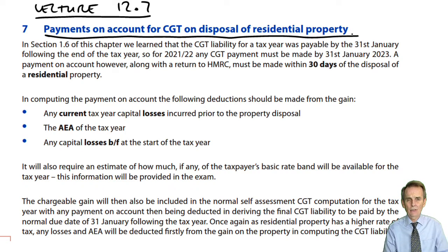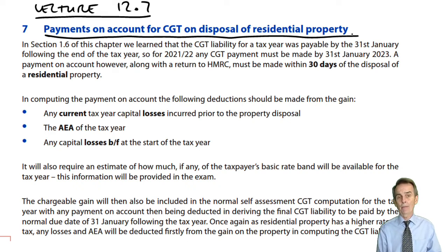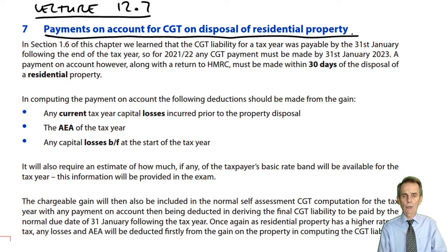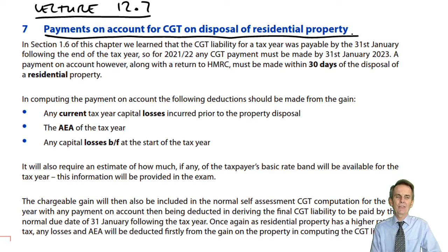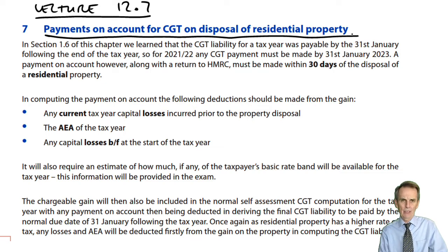We've already seen that the CGT liability is basically due at one point in time with no payments on account, and that point is the 31st of January following the end of the tax year in which the disposals took place. But over the years things have got harsher when it comes to people disposing of residential property — not their own residential property, the one in which they live, as that should be covered by private residence relief.